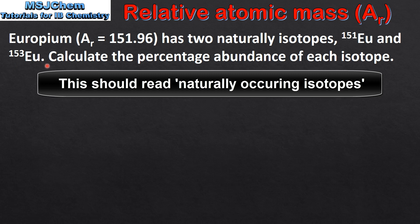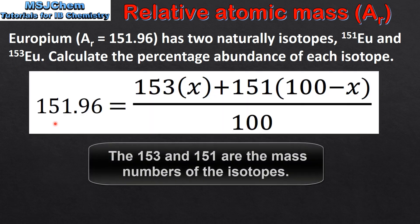Calculate the percentage abundance of each isotope. So we start by setting up the equation: the relative atomic mass, which is 151.96, equals 153 times x plus 151 times (100 minus x) divided by 100.